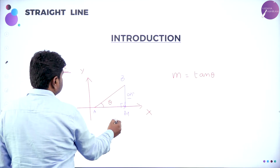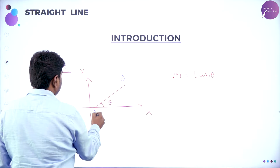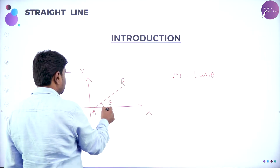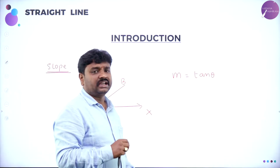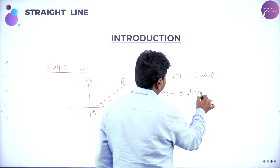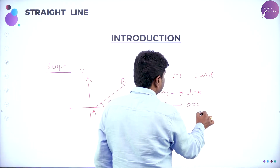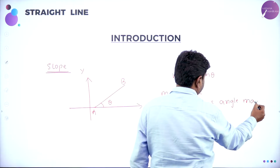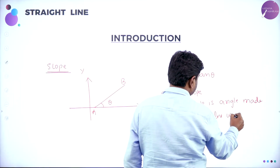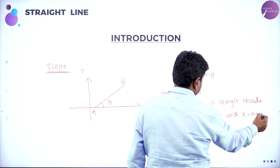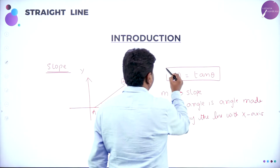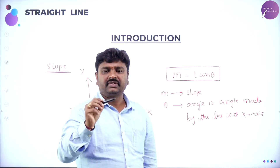I hope all of you have understood why slope uses tan theta. So if you know the definition of slope, that is more than enough. AB is a line. That line makes an angle theta with X-axis. Then slope of the line is tan theta. M is called as slope. M is slope; theta is the angle made by the line with X-axis. M is equal to tan theta is the definition of slope. Tangent of angle made by the line with X-axis is called slope.